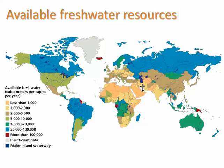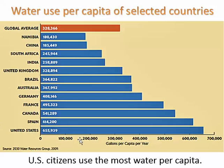The Middle East has a lot of money because of all the oil, and so they can afford, in most cases, to do desalination using seawater and the process of reverse osmosis to create freshwater. We can see here that the US is using more water per capita than any of these other countries, and twice as much per capita as the UK.